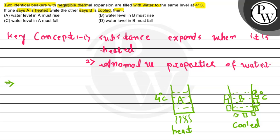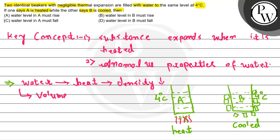According to the first concept — substance expands when heated — in beaker A, the substance is water and we are heating it. When water is heated, it expands, which means its density decreases and its volume increases. If the water expands, simply from this concept we can say that the water level in A must rise. According to this, option A will be correct.